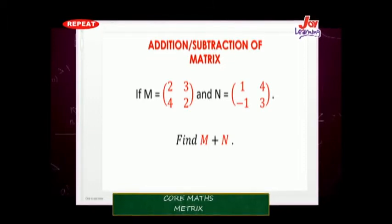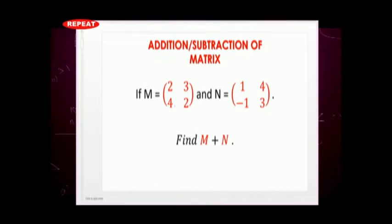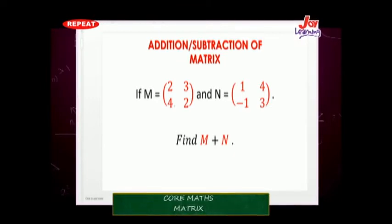Now let's look at addition and subtraction of matrices. A matrix can be added or subtracted, but first we must be careful about the order in which the matrix is written. For example, if M is a 2x2 matrix with entries 2, 3, 4, and 2, and matrix N is defined as 1, 4, negative 1, and 3.